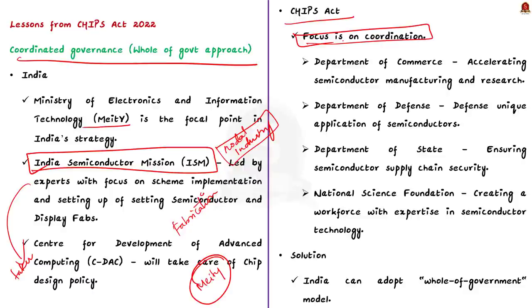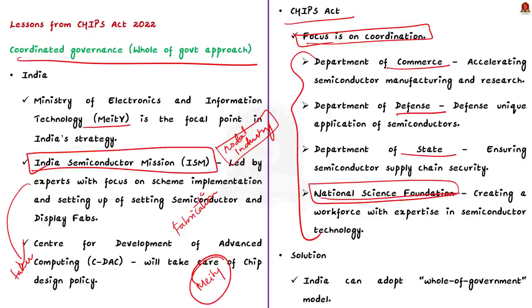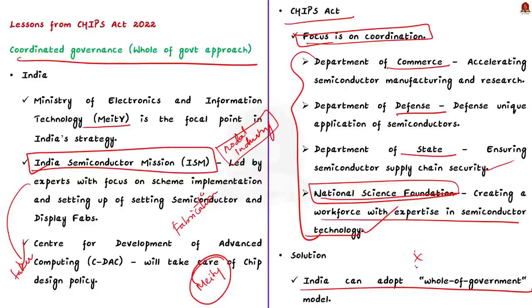The U.S. CHIPS Act gives more importance to coordination among various arms of the government. It envisages coordination among the Department of Commerce, Department of Defense, Department of State, and the National Science Foundation. The Department of Commerce focuses on accelerating semiconductor manufacturing and research; the Department of Defense focuses on defense-unique applications; the Department of State focuses on supply chain security; and the National Science Foundation focuses on creating a workforce with expertise in semiconductor technology. India could also adopt a whole-of-government model similar to the CHIPS Act and promote coordinated effort across different ministries and departments.